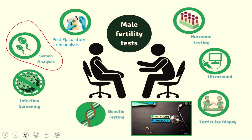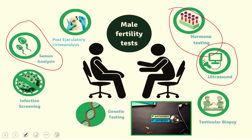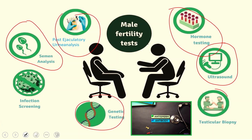I will discuss the parameters of semen analysis shortly. Other investigations include scrotal and transrectal ultrasound, male hormone testing, anti-sperm antibody testing, post-ejaculatory urine analysis, genetic testing and karyotyping, testicular biopsy, and infection screening.